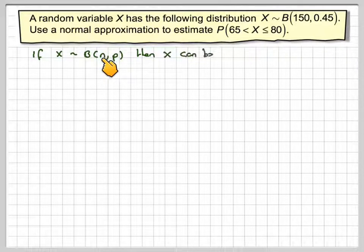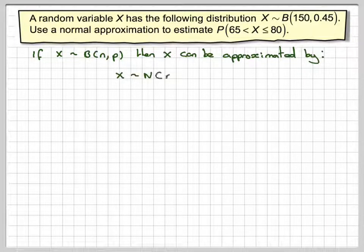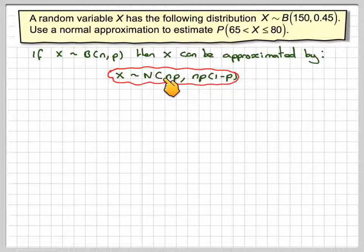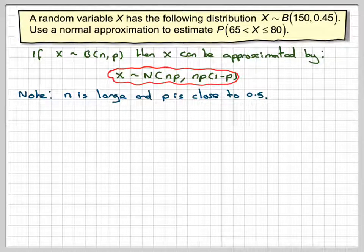If X is binomially distributed, then X can be approximated by X belonging to the normal distribution where the mean of the normal distribution is np (n times p, which is the mean of the binomial), and the variance is np times (1 minus p). In some books that's written as npq, where q is the probability of not succeeding. Note: n is large and p is close to 0.5.